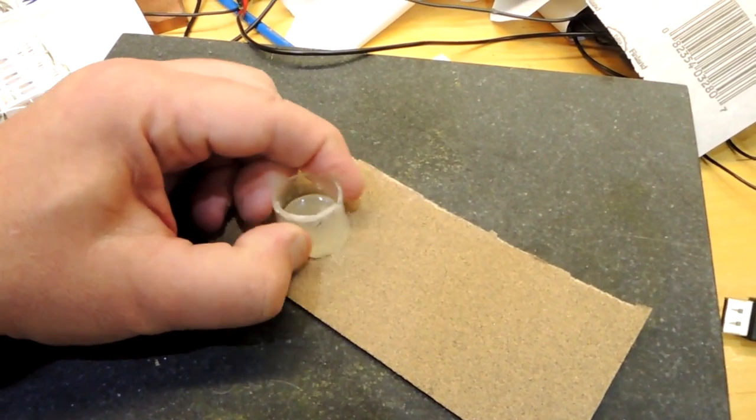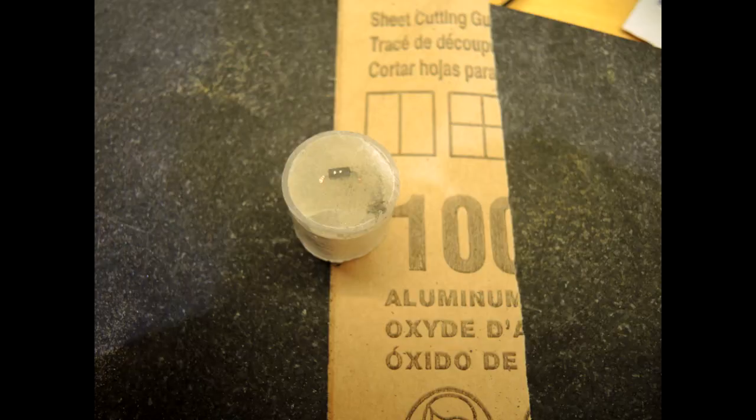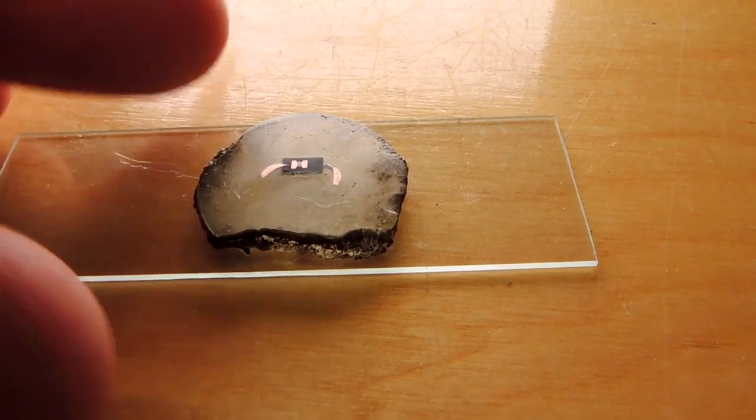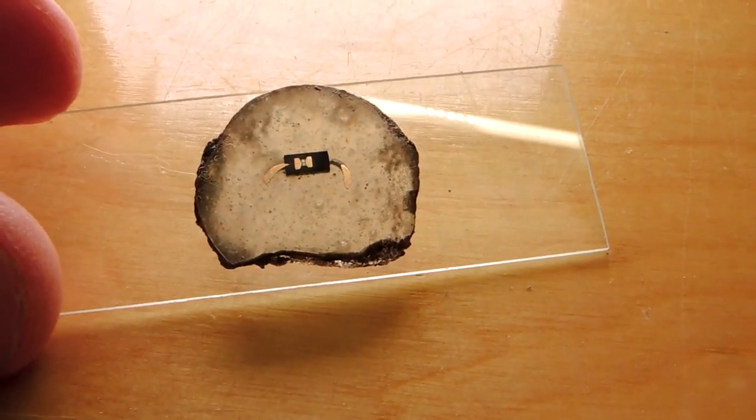You got to be a little bit careful with this process. You got to take your time. The epoxy will turn into sort of a goo if you take it down too fast. After about half an hour of lapping you end up with essentially half a diode.